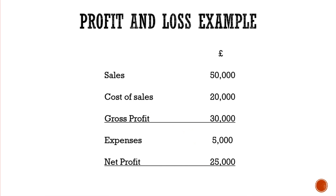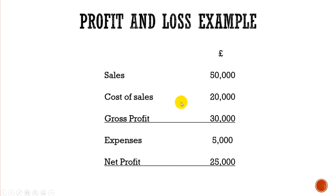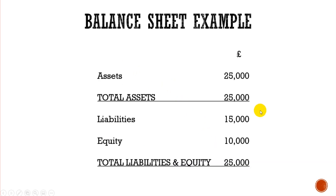A profit and loss statement shows the profitability of a business — the amount of sales — and you can have it year by year, month by month, or week by week to compare different periods. The balance sheet shows what the business owns and owes; it's a list of the entity's assets and liabilities.